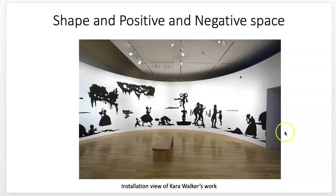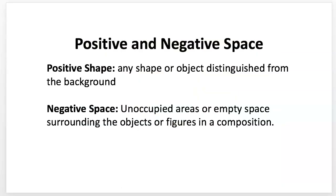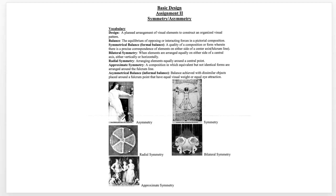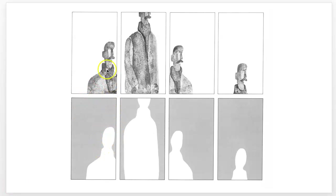In this example, Kara Walker — a surrealist artist whose work is about being a Black woman in America — uses negative-space shadows in her installations. The black would be the positive shapes, and the negative space is what's left over in white. Positive shape is any shape or object distinguished from the background. Negative space is the unoccupied or empty space surrounding the objects in the composition. When designing, you have to think about what space is left behind to make it interesting.